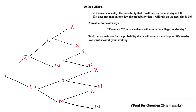I've drawn a probability tree here. We know there's a 70% chance it will rain on Monday — 70% is 0.7, so we can write that in. I've drawn three diagrams here because it's Monday, Tuesday and Wednesday — three days till Wednesday.